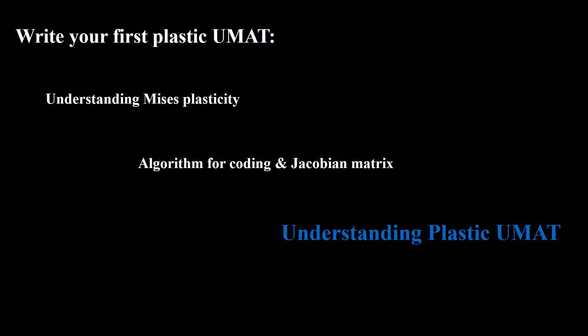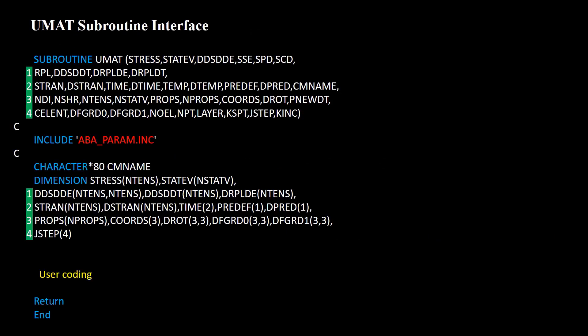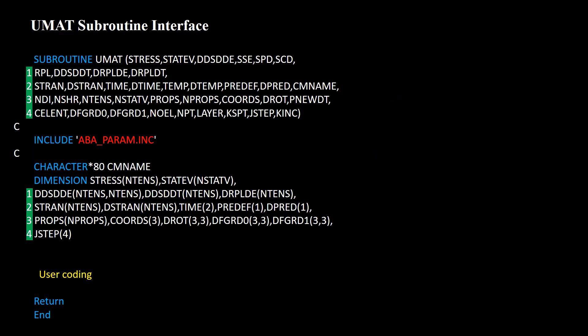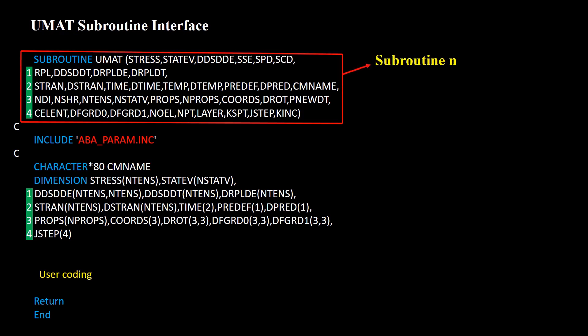To write or understand the subroutine, the first step is understanding the subroutine interface. You can find the UMAT subroutine interface from the Abaqus documentation — from the Subroutines Guide, find UMAT and then find the subroutine interface. The first part of the interface contains the subroutine name and all input and output variable information. At the beginning of the increment, strain increment are inputs, and we should calculate information at the end of the increment as the output.